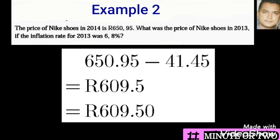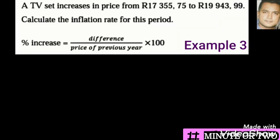Example 3: A TV set increases in price from R17,355.75 to R19,943.99. Calculate the inflation rate for this period. There is a given formula which they expect you to work with.